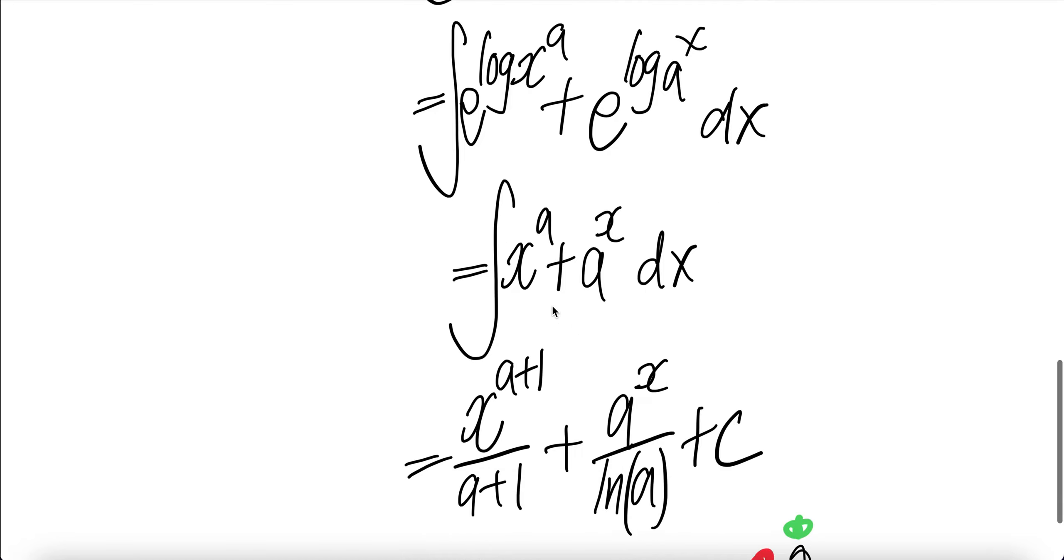Integral of a sum is the sum of integrals. The integral of this is x to the a plus 1 over the exponent. The integral of this is a to the power x divided by ln of the base, which is ln a, plus c.